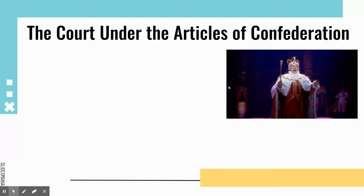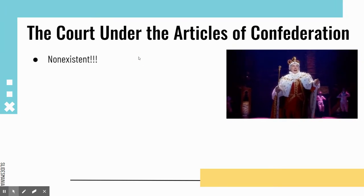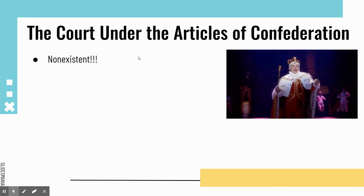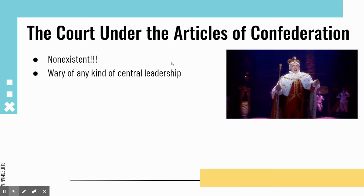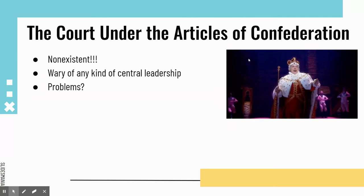Let's start with the Articles of Confederation and go through the history of the Supreme Court and our federal court system. Under the Articles of Confederation, the federal court as we know it was non-existent. There was no federal system. Really, the only branch was Congress, and it was very, very weak. The reason being, our founding fathers were very wary of any kind of central leadership — very afraid of a strong unitary government. And that's why, obviously, we don't have the Articles anymore.